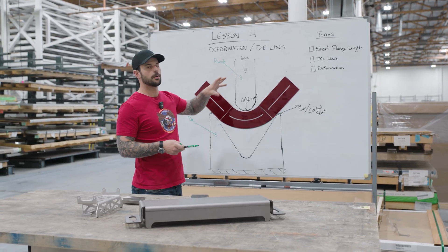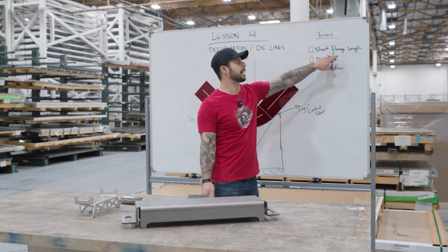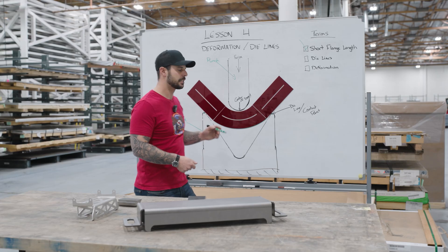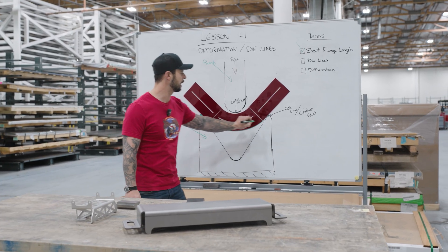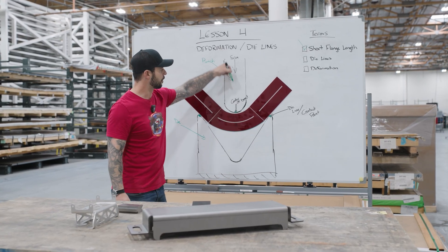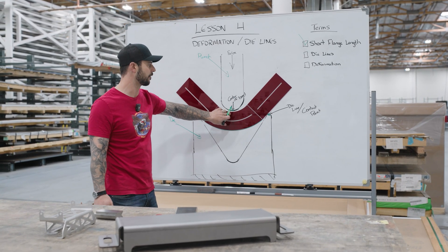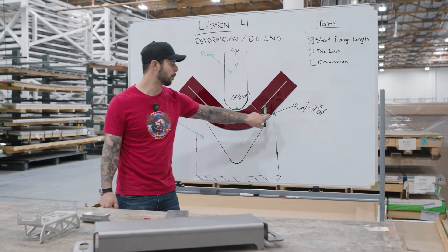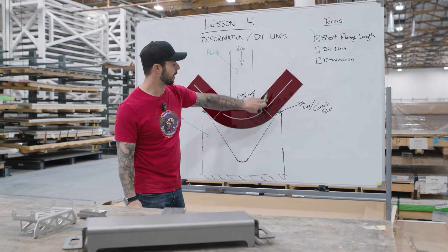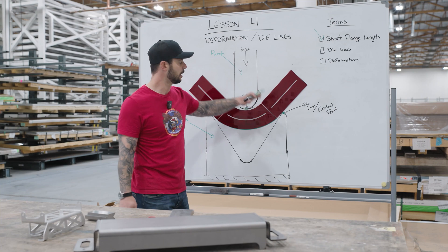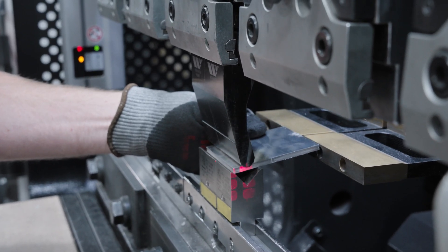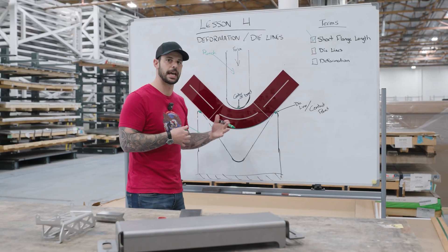The first new key term is flange length — specifically, short flange length. The concept is that we have three key points of contact that must occur for a bend to successfully happen: the contact of the punch coming down at the center of the bend, and two points of contact on each side of the die spanning across it. If the flange does not make contact with that third point, the flange will fold into the V and we don't get a bend. Those three points of contact are critical.